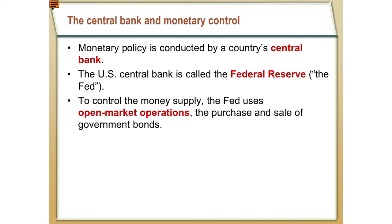The primary tool that the Federal Reserve uses to control the money supply is what we call an open market operation. This is the purchase or sale of government bonds from banks. If the Fed wants to increase the amount of liquidity in the system, they will purchase government bonds from banks, increasing liquid reserves available for lending. Conversely, if the Federal Reserve wants to shrink the money supply, they will sell government bonds, sucking liquidity out of the system and reducing reserves.